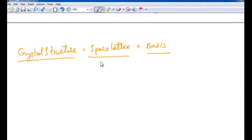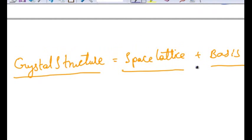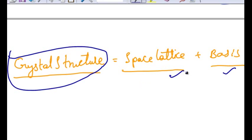Now that we know what is a Space Lattice and a Basis, the Crystal can be defined as a combination of Space Lattice and a Basis. So now let us learn about the Unit Cell.